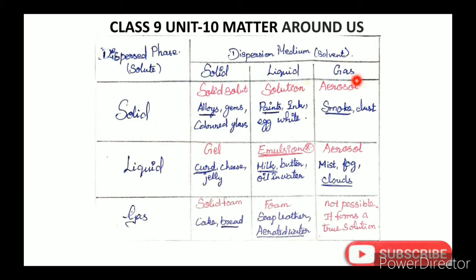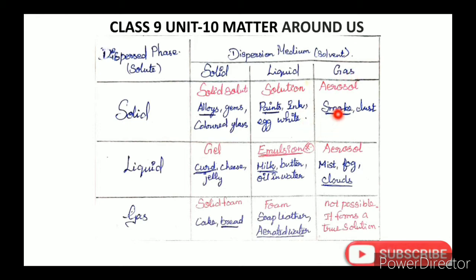For a solid in liquid colloidal system, examples include paint and egg white. Solid in solid gives a solid solution — examples are alloy and gems-colored glass. Solid in gas gives smoke and dust.